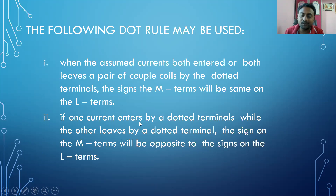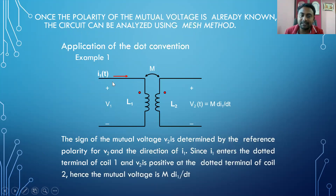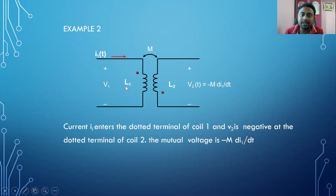I am considering an example. In this example, current I1(t) is fed into coil 1. By this current I1(t), the mutual induced voltage occurs at V2(t). I am writing it as +M di1/dt, because in both cases the current entered at the same terminals — both currents enter the dotted terminals.